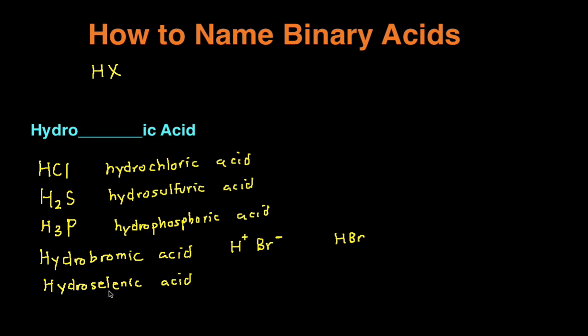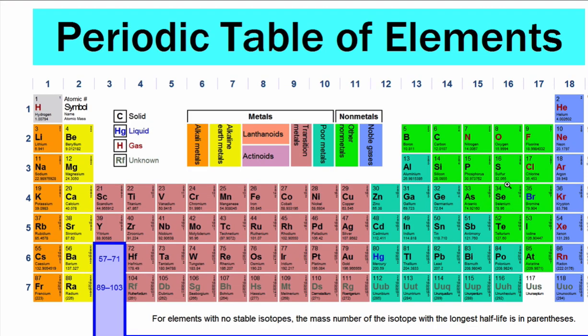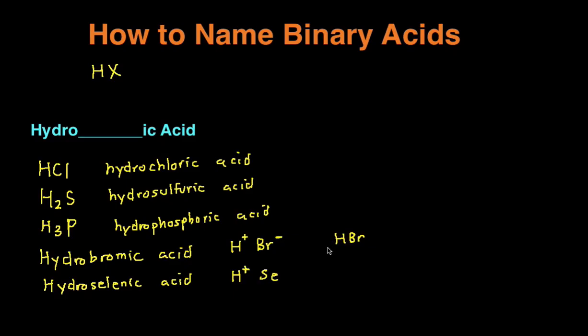And then the last example, hydroselenic acid. Again, we see hydroic acid, so we know it's going to be binary. So we know there's going to be H. And then selenic is going to be selenium. And then we write the charge. Hydrogen is going to be positive one charge. And let's check what charge selenium is. It's in the same column as oxygen, so we know selenium is going to be a negative two charge.